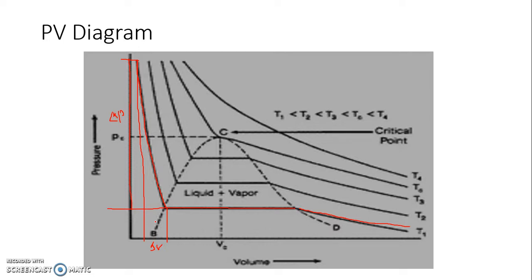The subcooled liquid moves toward saturation with a slight increase in volume as pressure decreases, but a large change in pressure is required for that small volume increase. Once it reaches the saturation point, you have saturated liquid. Any further change impacts the phase — the horizontal line shows liquid slowly converting into vapor, while pressure and temperature remain constant, because for a pure component the boiling point is fixed.